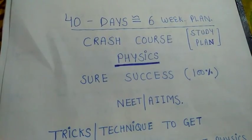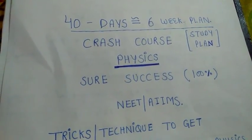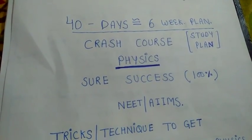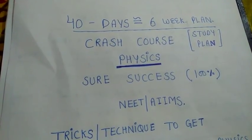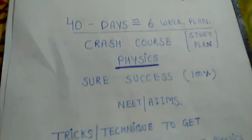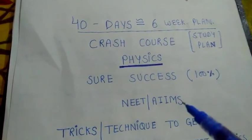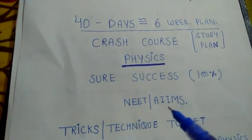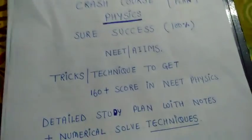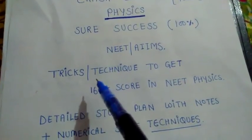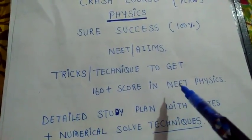As most of the students were demanding, and also in my academy, I am going to start a crash course for exam preparation. In this video, I will share the 40-day plan, or the 6-week plan, to get sure success — 100% success — in the NEET or AIMS exam. I will start the crash course for physics and share some tricks and techniques to get 160 plus scores in NEET physics.